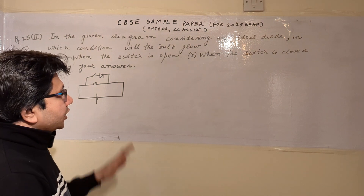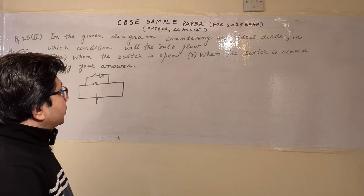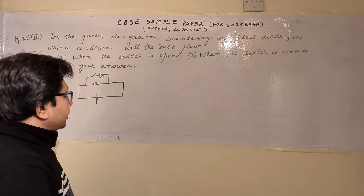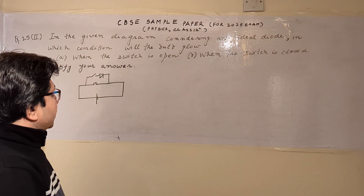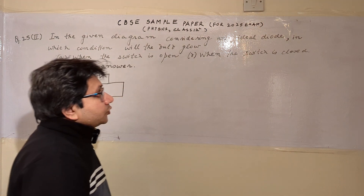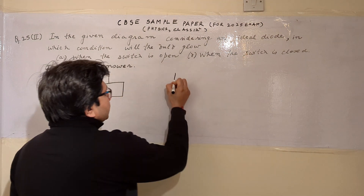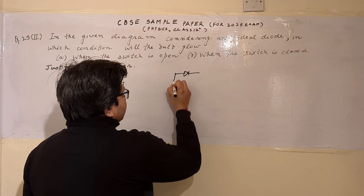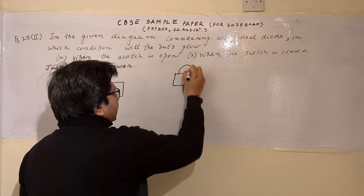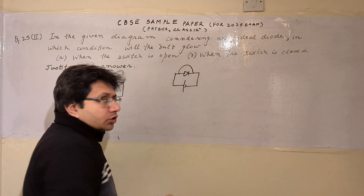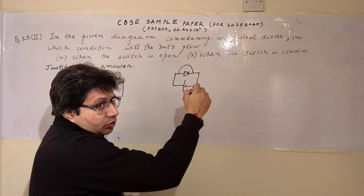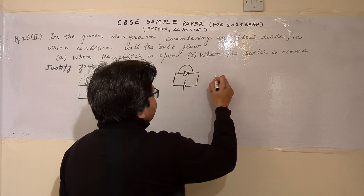The problem is based on the topic of diodes, and in particular the use of a diode in a circuit. The diode given here is an ideal diode. An ideal diode, when forward biased, works as a short circuit — meaning a wire having zero resistance.